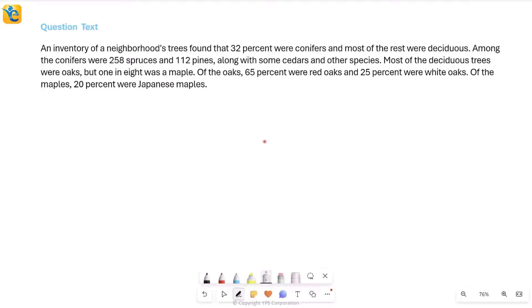Now all of this is about the trees in a certain neighborhood and the question is telling us what are the types of these trees. First thing it tells us is that 32% of all the trees were conifers and most of the rest were deciduous. So if I try to visualize just this much, then suppose the total number of trees was 100X, then how many of these were conifers? These were 32X.